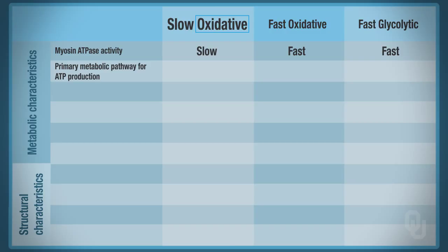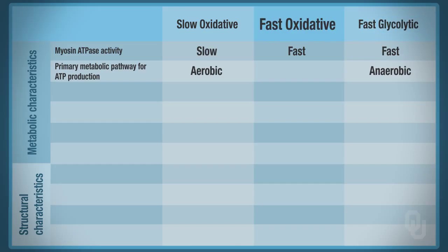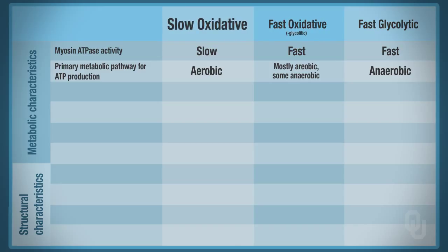Oxidative means complete oxidative phosphorylation — aerobic respiration. In fast glycolytic, glycolytic means the only respiration pathway occurring is glycolysis, so this is an anaerobic metabolic pathway. In the intermediate form, fast oxidative, this is mostly aerobic respiration; however, there is some anaerobic respiration taking place, which is why this fiber type may be written as 'fast oxidative-glycolytic.'